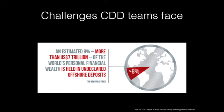When the OECD reviewed 400+ bribery cases across 41 countries for its 2014 report on the analysis of the crime of bribery of foreign public officials, it found that one in four involved illicit money channelled through shadowy secret companies. The World Bank estimated that corporate politicians use secret companies to obscure their identities in 70% of more than 200 cases of grand corruption. The New York Times reported in 2014 that an estimated eight percent — more than seven trillion US dollars — of the world's personal financial wealth is held in undeclared offshore deposits.